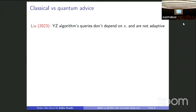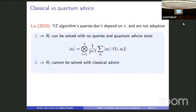After Yamakawa and Zhandry came up with this result, Liu noticed that the quantum algorithm for solving the Yamakawa-Zhandry problem has queries that don't actually depend on x and are also not adaptive. What this means is that R_f can in fact be solved with no queries and a quantum advice state — whatever state the Yamakawa-Zhandry algorithm was preparing by making queries can just be given as an advice state. Specifically, the advice state is a superposition over all u_i with the function value of (i, u_i) given. Liu also showed that R_f cannot be solved with classical advice.